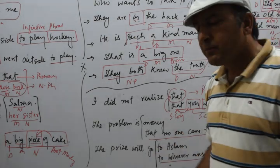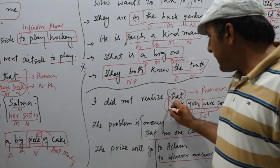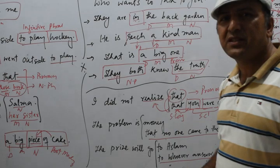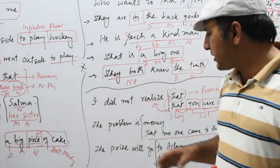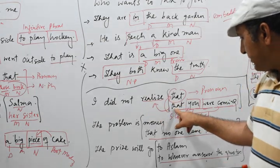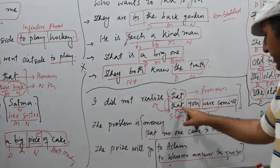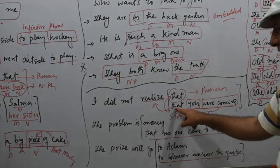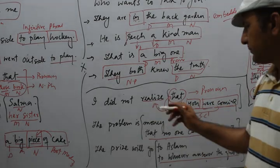Remember: mostly a noun clause comes after a verb. This is a very simple formula — mostly the noun clause comes after a verb. So in 'I did not realize that you are coming,' the noun clause 'that you are coming' comes after the verb 'realized.'